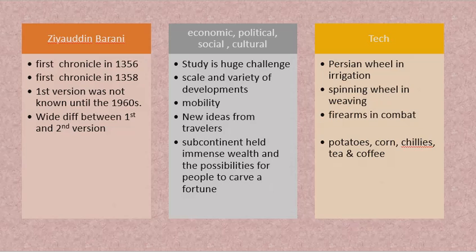Firearms were another innovation. During this period, different kings and maharajas got access to firearms, which changed the way wars were fought and resulted in many lives lost. There were upheavals — widespread changes in the social, cultural, political, and economic life of the people during this period from 700 to 1750.